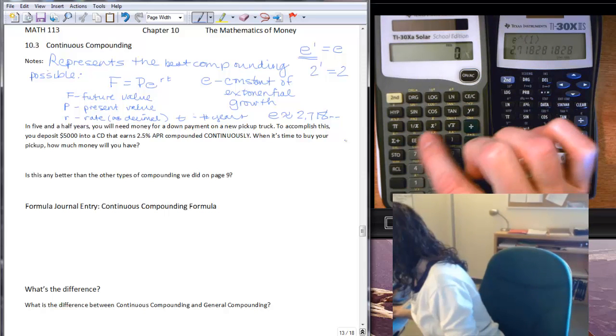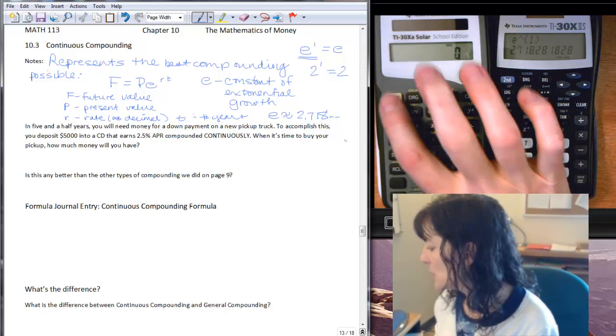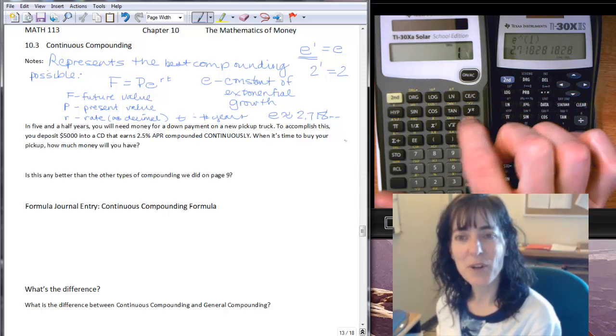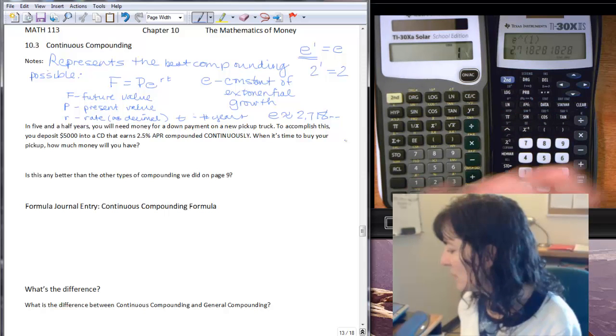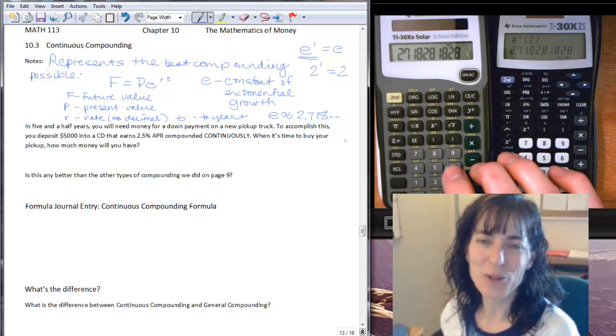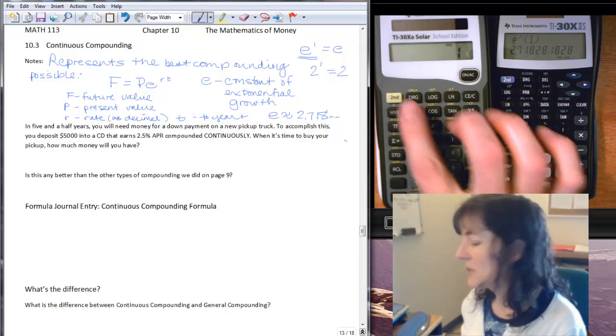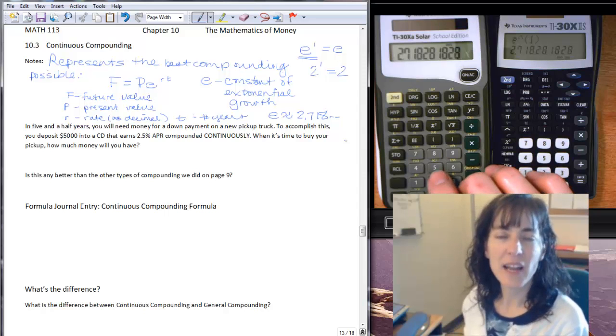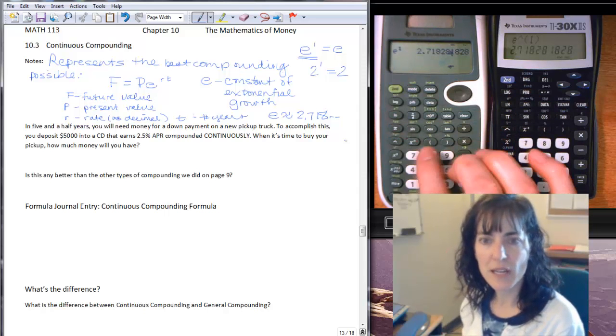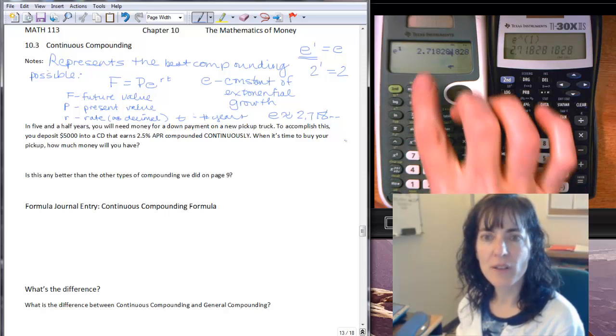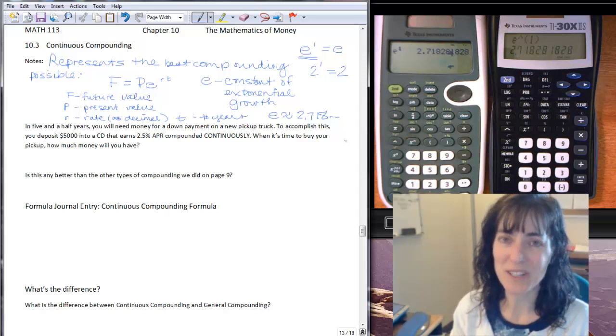And this one, the LN button is in a different location, but it's still right above it. You can see the E to the X there. So I'll do second, LN, and it says one, but for this calculator, you have to put in the exponent first. So I have to say one for my exponent, and then LN, and there's the 2.718. So again, for this calculator, the 30XA, I have to put my exponent first, which was a one, and then I do the LN, and I get the 2.718. These other two calculators, remember you do the second LN first, and then you put in the one for the exponent, and then you get the 2.718. So whichever calculator you have, you need to know how to do E to the, because we're going to use that.